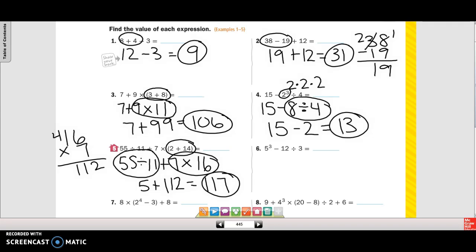Our next one is 5 to the 3rd minus 12 divided by 3. There's no parentheses, so we're going to start with exponents. So that's 5 times 5 times 5, and that's 125 minus 12 divided by 3. We're going to do division. So 125 minus 4 equals 121.